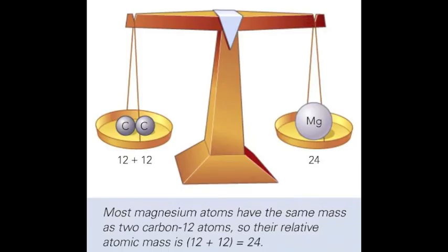The mass of an atom is incredibly small, so we use relative atomic mass instead of its actual mass in kilograms. The symbol for relative atomic mass is capital A small r.